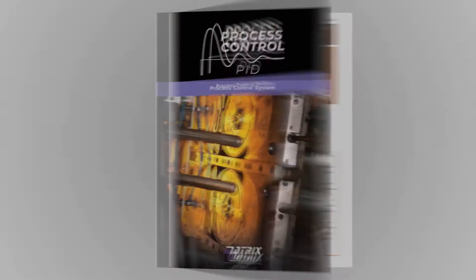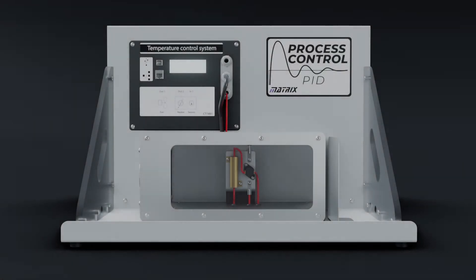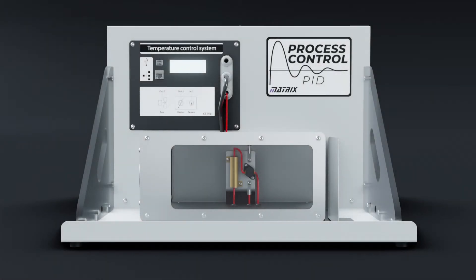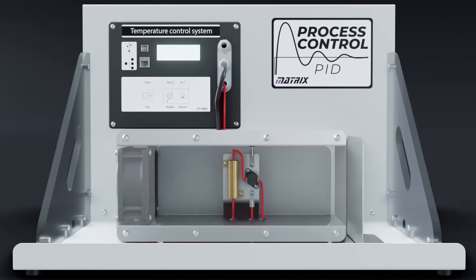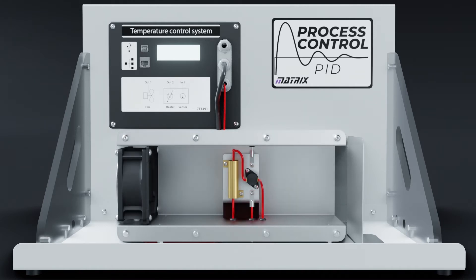Further details of each control system follow. The temperature process control system includes a heated plate within a duct. Two thermocouples connect to the controller to allow students to check and calibrate the controller input.